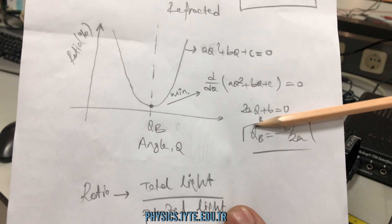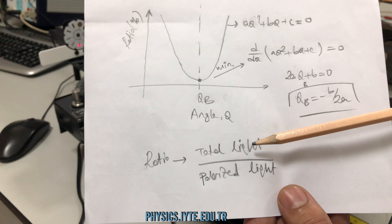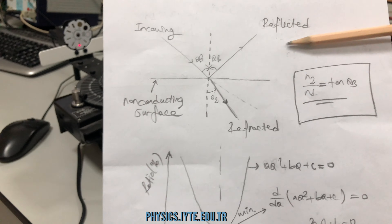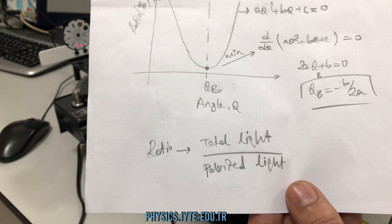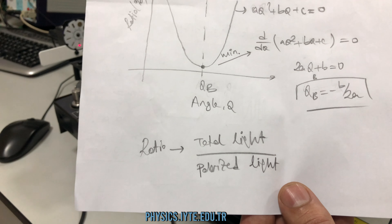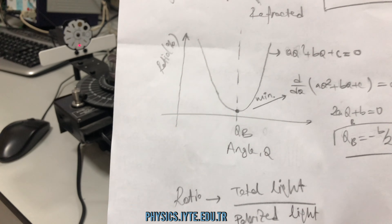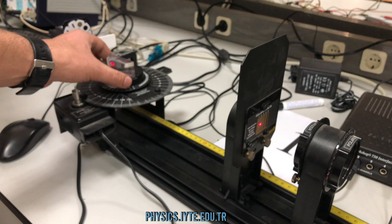In the experiment, we draw a ratio versus angle graph and it looks like this. Its minimum will be given by this formula, and we can find the Brewster angle with this formula. Here, the ratio is given by total light — which is the reflected light divided by polarized light. We measure these two parts, obtain the ratio, and draw ratio as a function of angle.